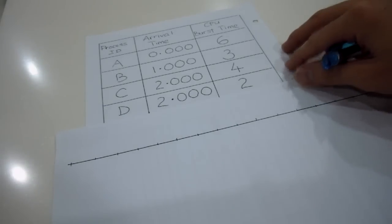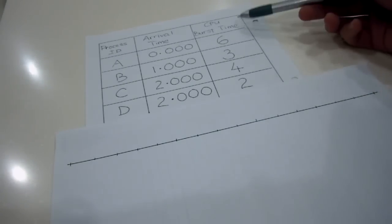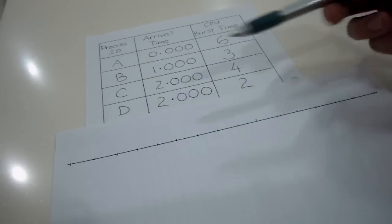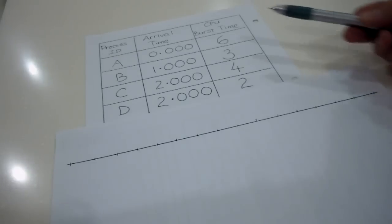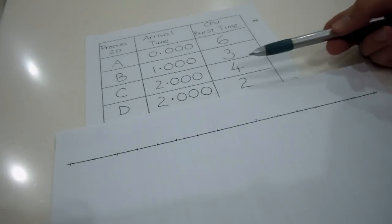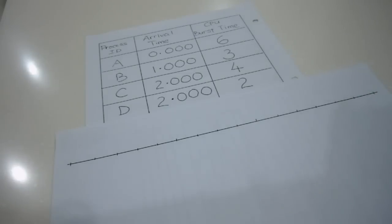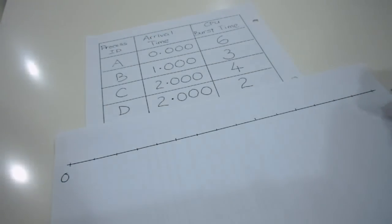So before we start to draw the Gantt chart, it's always good that you calculate the total of the CPU burst time so that you can actually plan for the length of your Gantt chart. So now I have 6 plus 3 plus 4 plus 2, so I have a total of 15 milliseconds here. So I'm going to begin with 0 and end with 15.